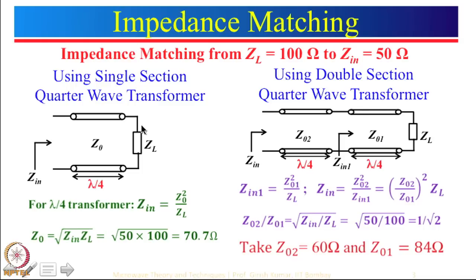Let us look into one more thing here: using a double section quarter wave transformer. What is being done here is that instead of using one lambda by 4 section, we now use two lambda by 4 sections. The characteristic impedance of the first transmission line is Z01 and the characteristic impedance of the second line is Z02. We want to find Z input here equal to 50 ohm, knowing that ZL is equal to 100 ohm.